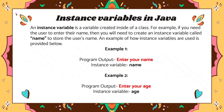An instance variable is a variable created inside of a class. A class is basically your Java program — before you create a Java program, you will have a class, and that is basically the program itself. Without the class, you can't really have a Java program, so it's like the basic backbone of creating one.